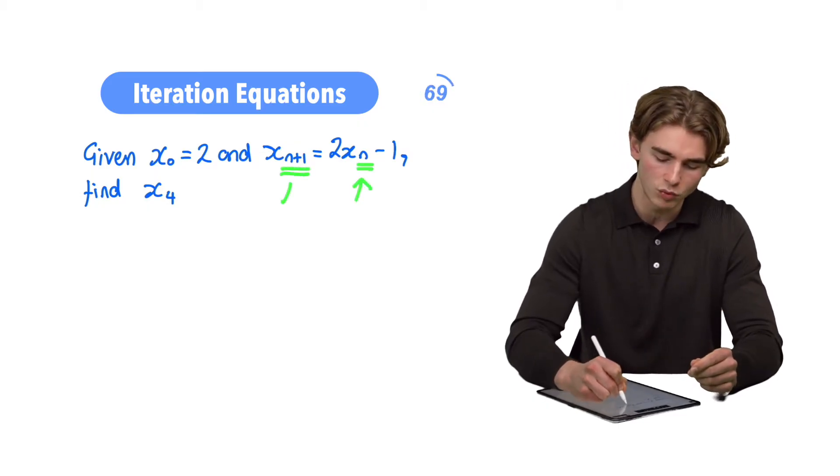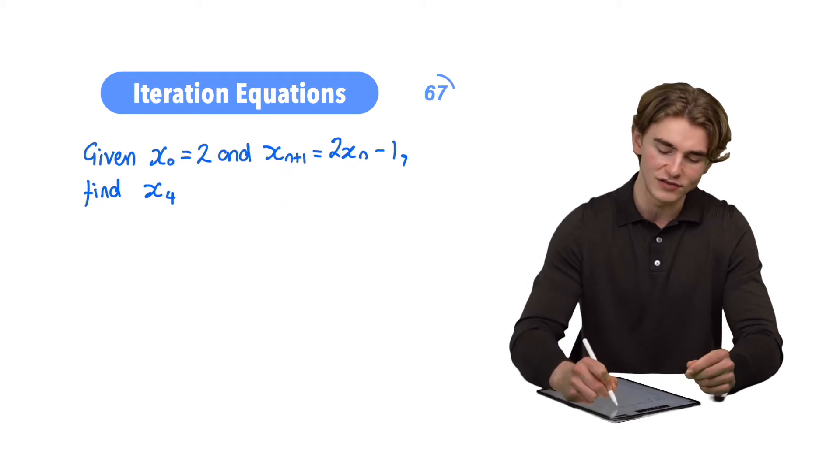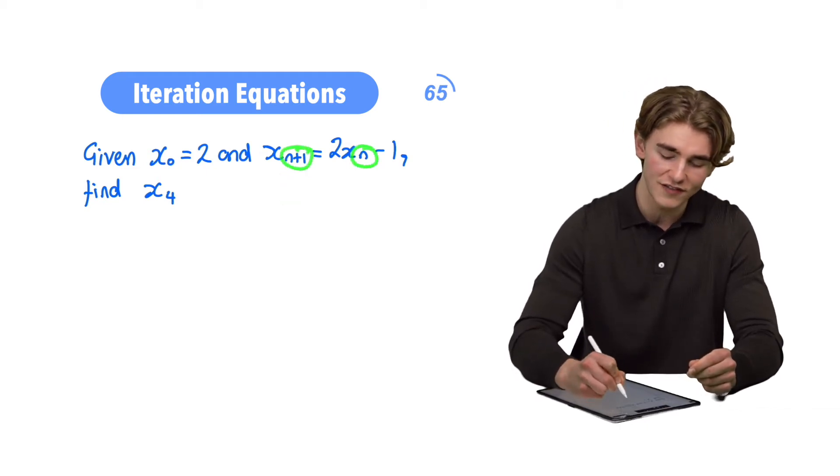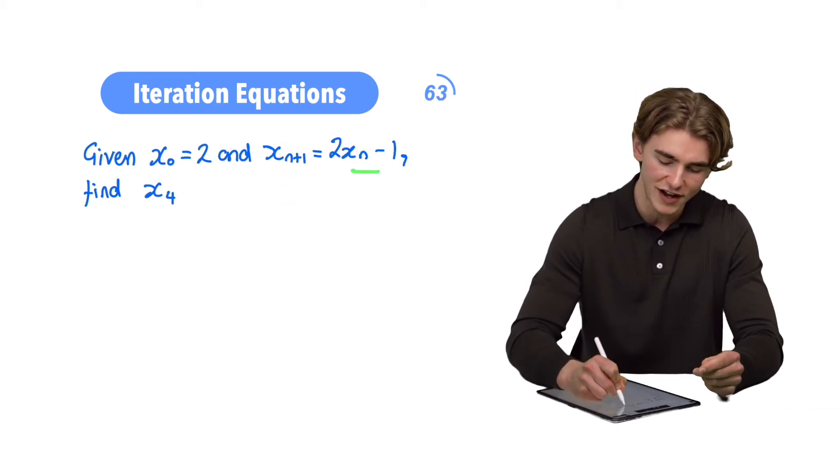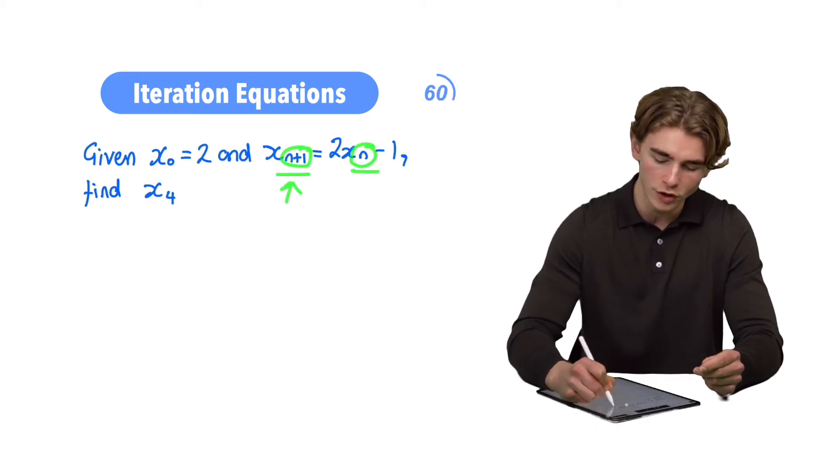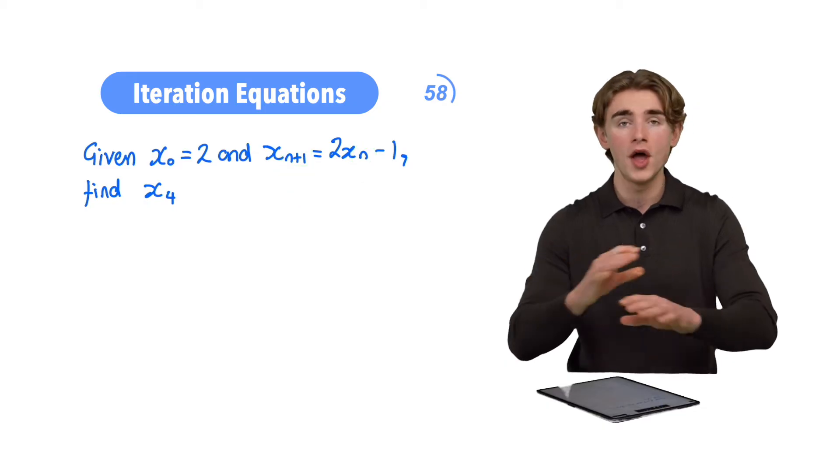So, if n was 1, n plus 1 is going to be 2. In other words, it tells us how to get from the first value to the second value, or from the fifth value to the sixth value. It's always going to be the next value, because we're just adding 1 to the number which is current.